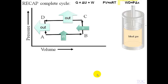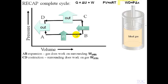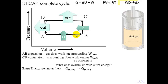If we run the cycle backwards, we do work to the gas. The gas expands a little and does a small amount of work to the surroundings, but the surroundings must do a lot of work to the gas to make it contract. We put in a net amount of work into the gas, and as a consequence we get out more thermal energy than we put in, because of this extra work done. The AB expansion gives this amount of work; the CD contraction requires greater work input, meaning we get extra thermal energy out.